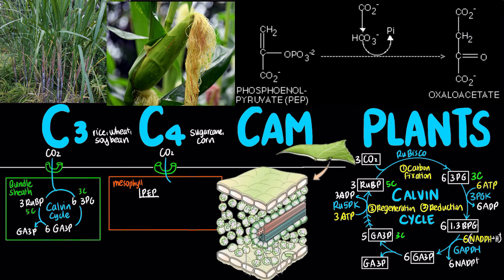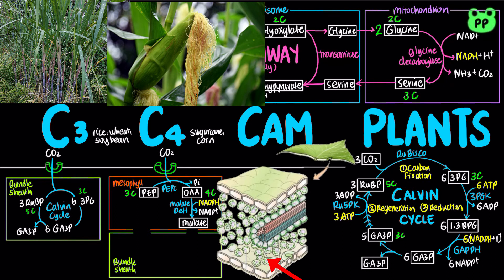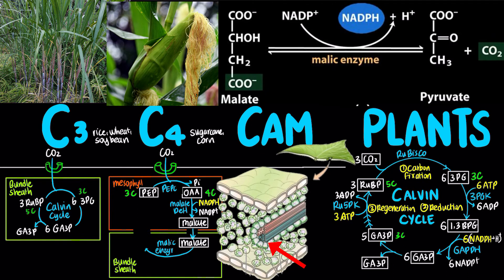Instead, carbon dioxide condenses with the 3-carbon phosphoenolpyruvate to produce the 4-carbon oxaloacetate by the enzyme phosphoenolpyruvate carboxylase, or PEPC, which occurs in the mesophyll cell. Next, malate dehydrogenase reduces oxaloacetate to malate, which is coupled to the oxidation of NADPH to NADP+. Malate travels across plasmodesmata to bundle sheath cell, where it is oxidized to pyruvate by the malic enzyme, releasing carbon dioxide that can enter the Calvin cycle.